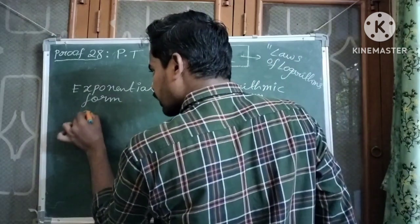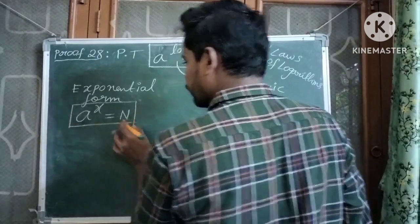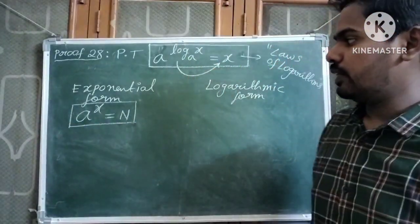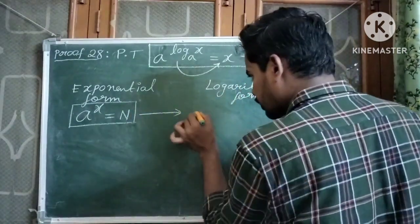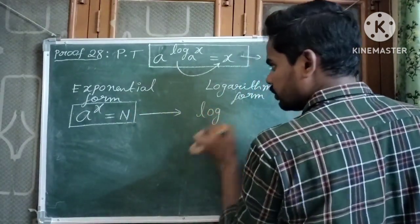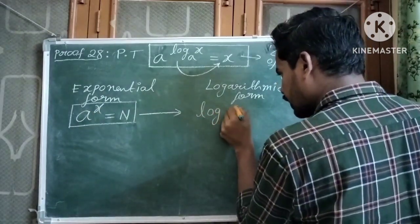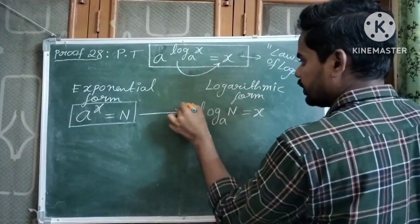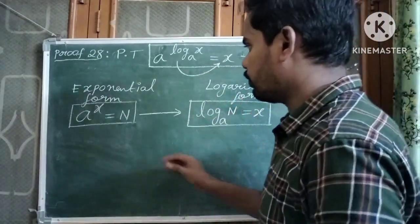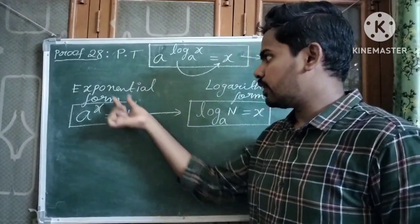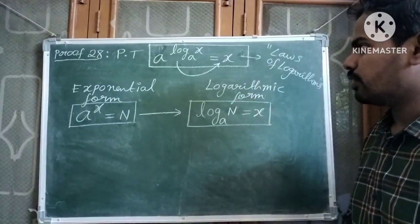So, a to the power x is equal to n is called exponential form. If a power x is equal to n, then log n to the base a is equal to x is called logarithmic form.